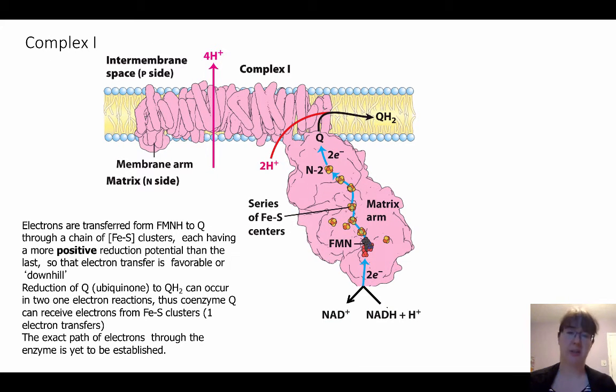As those electrons are transferred from one iron sulfur cluster to the next, each one of these is going to have a more positive reduction potential than the last one. So remember that those electrons are being passed in a favorable manner.